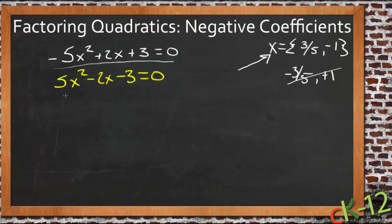And then we'll use our three checks. So we need two things that multiply to be 5x squared. So that would be 5x and x. And then we need, that's our first check, and then we need two things that multiply to be negative 3.